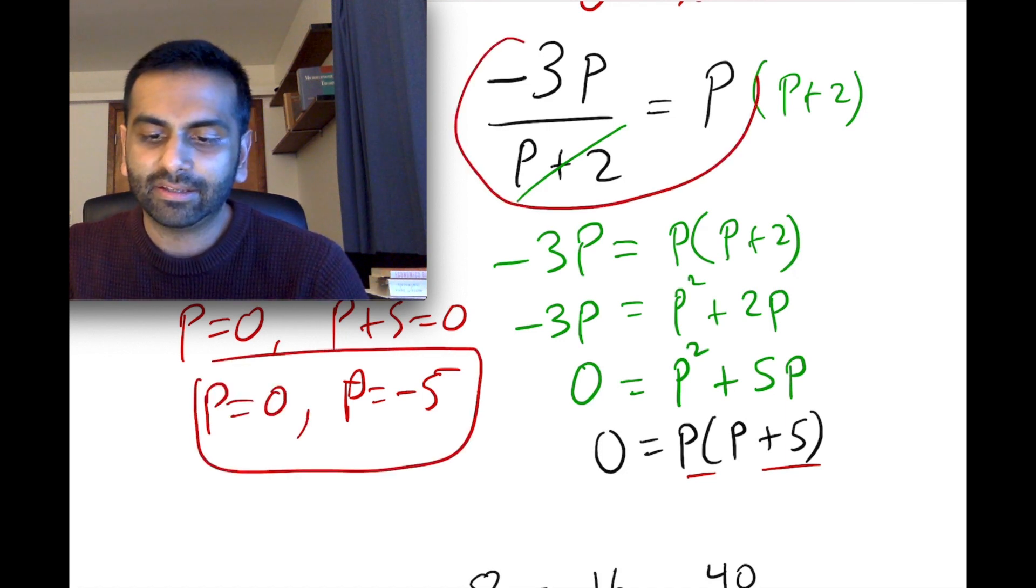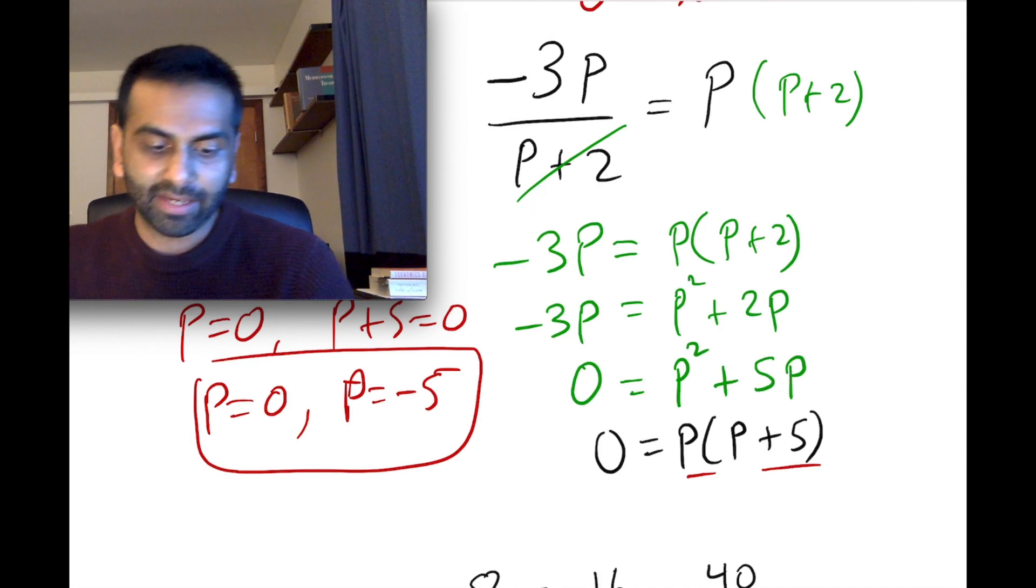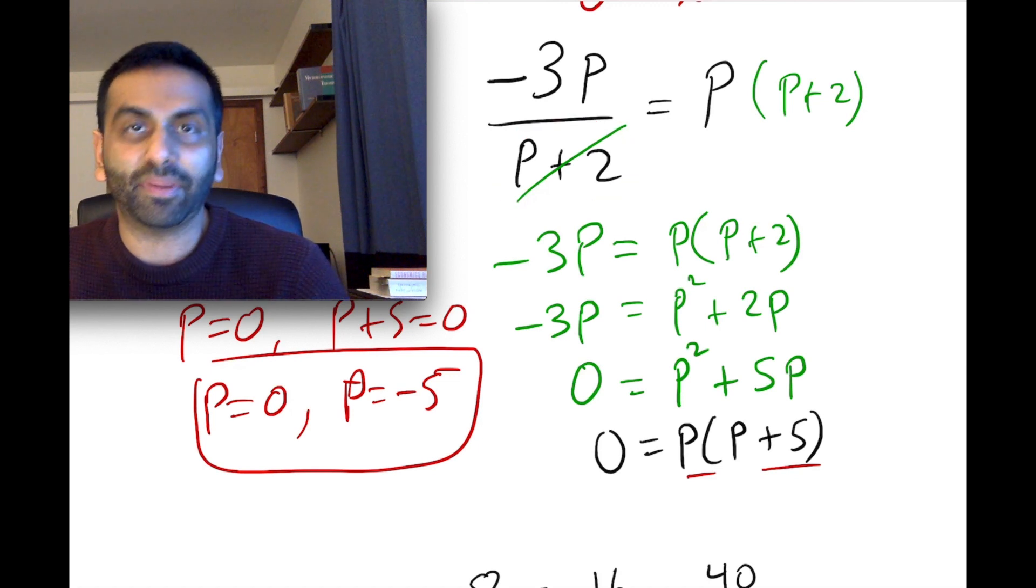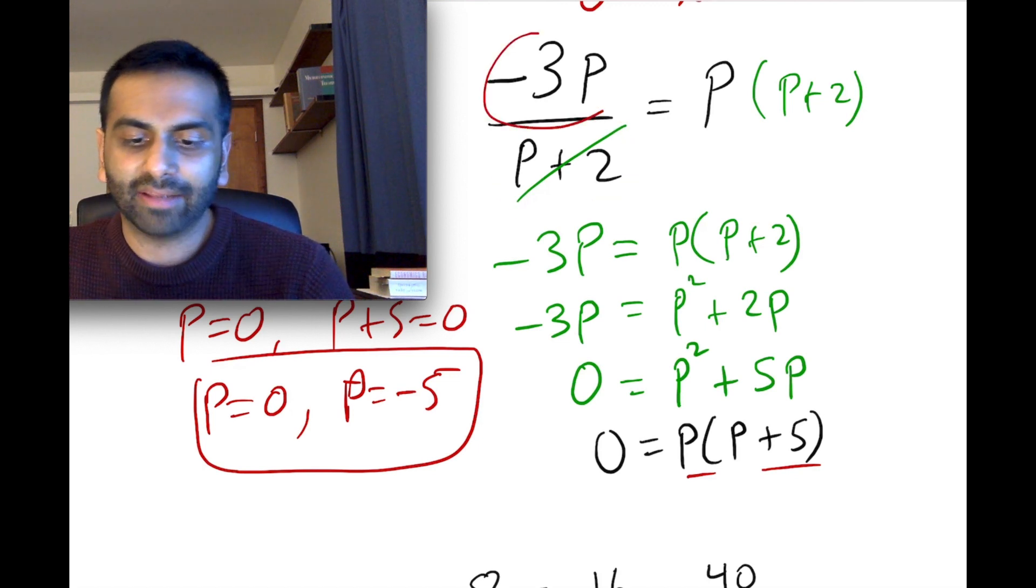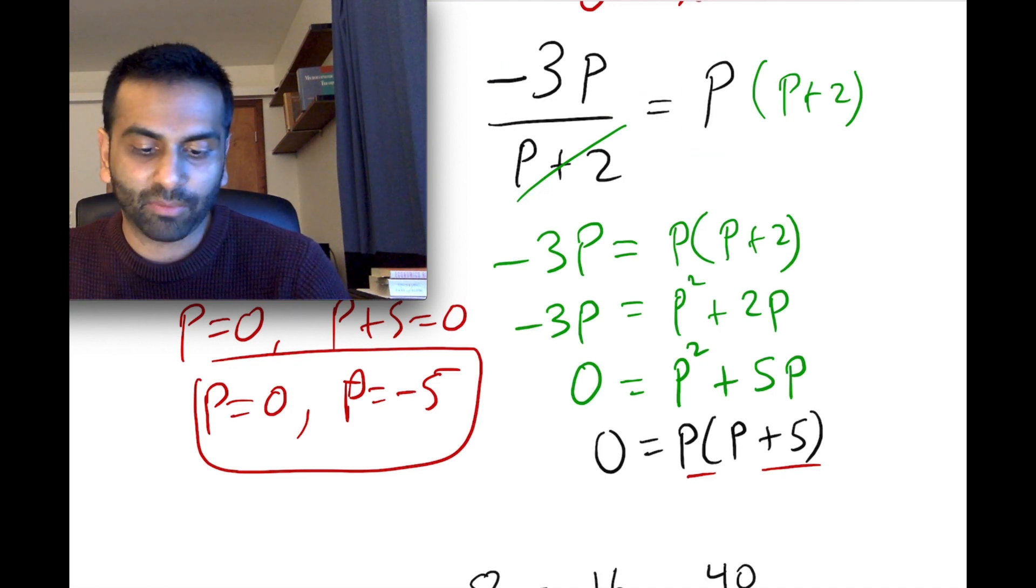And again, you can go back into the original, plug it in to see if it works. And yeah, 0 does work, right? Because p, 0 plus 2 on the bottom is 2. And negative 3 times 0 is 0. So in either case, you get 0 on the left and 0 on the right. So that works.